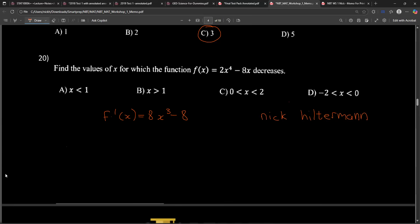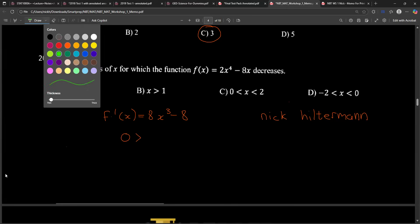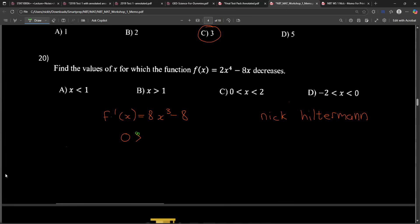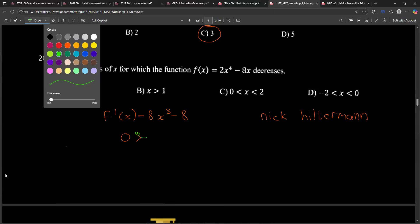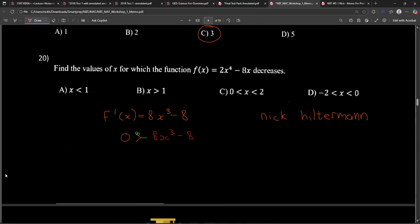Okay, more maths please, less messing around. When the function is decreasing, that means the derivative is less than zero. So less than zero. We have to divide by 8, and we get x³ - 1 < 0.